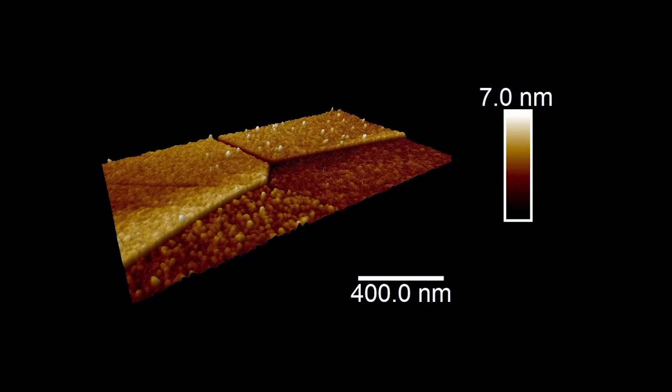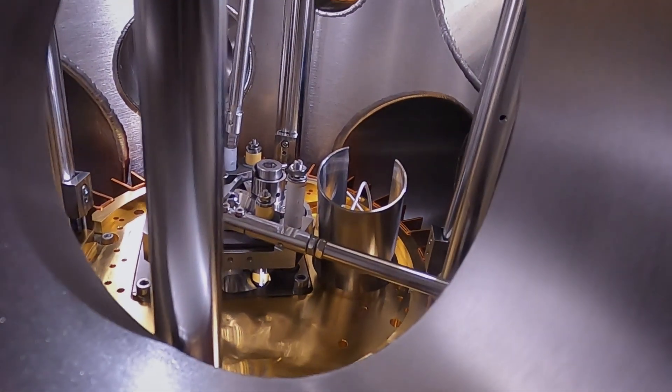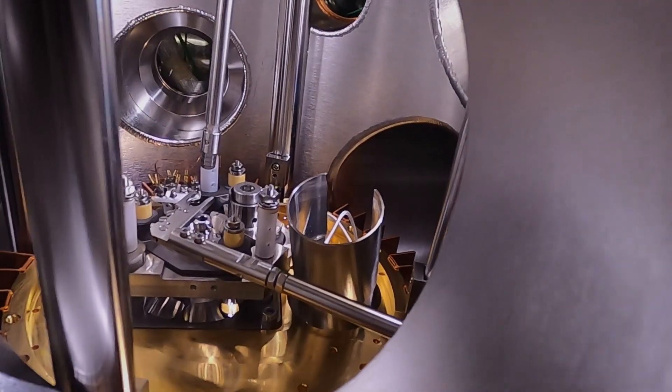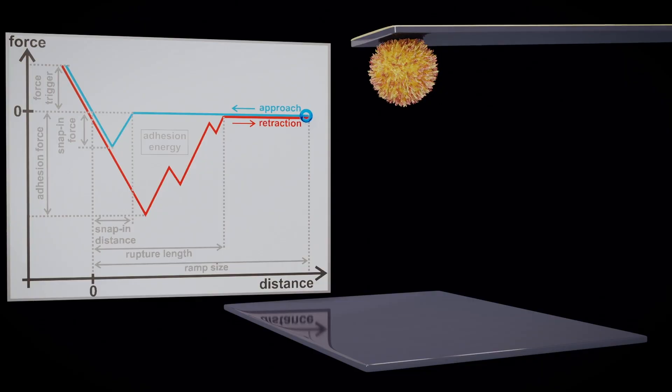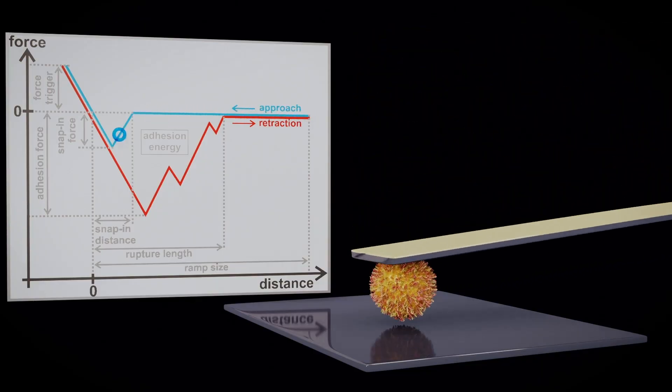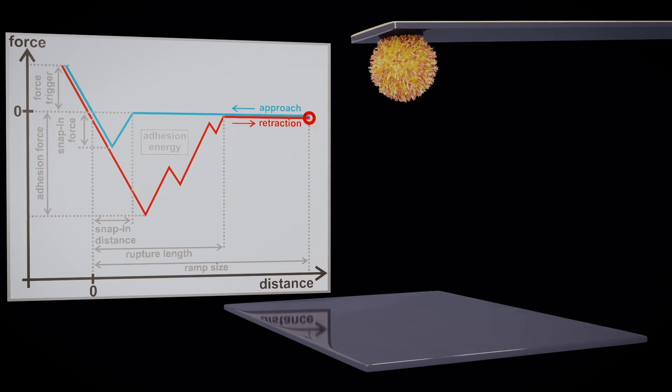We are interested in biofilm formation. To study bacterial adhesion, we use modern surface science techniques such as photoelectron spectroscopy, ellipsometry, scanning and transmission electron microscopy, or atomic force microscopy. We attach one living bacterial cell to a tiny cantilever and press it onto a surface and measure the force that is needed to detach the cell.